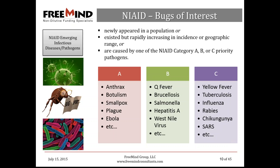I've listed a sampling of infectious diseases and pathogens targeted by NIAID; for the complete list, check the NIAID website. This priority list is periodically reviewed and revised with federal partners including Homeland Security and the CDC. Category A pathogens pose the highest risk to national security and public health. Category B is the second highest priority, and Category C includes emerging pathogens that could be engineered for mass dissemination in the future.